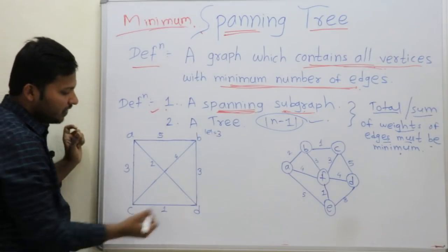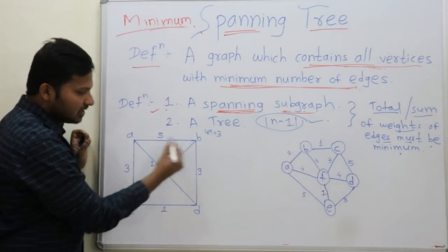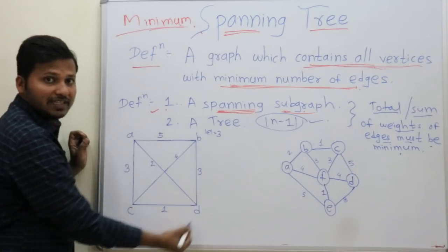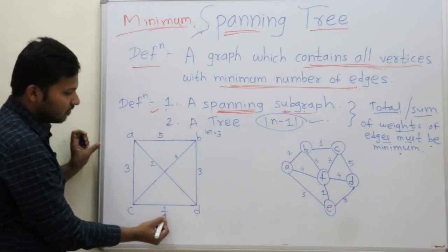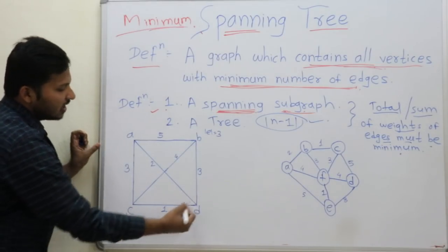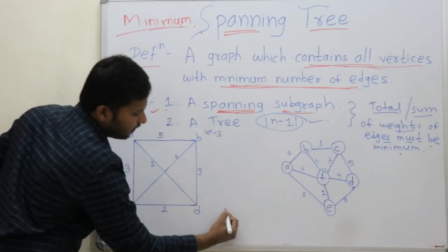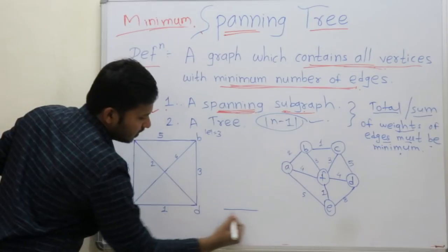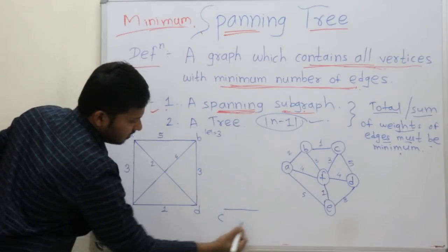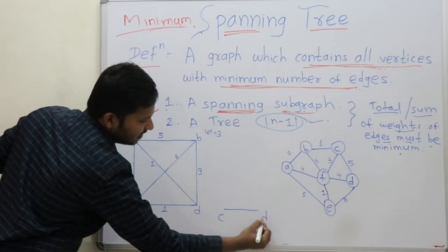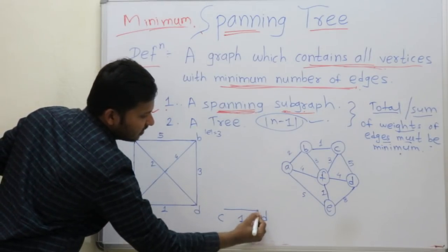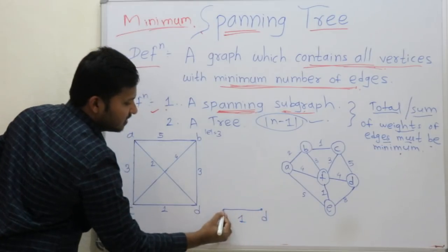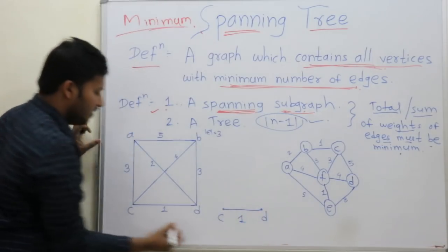See the weights. What is the minimum weight? Minimum weight is 1. So start from edge C to D with weight 1 — that is the minimum weight.